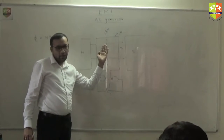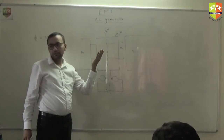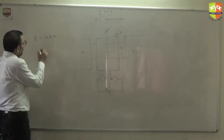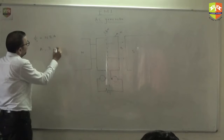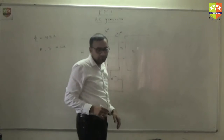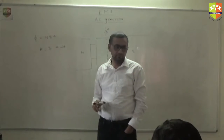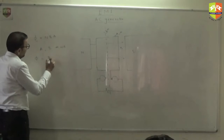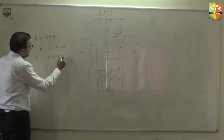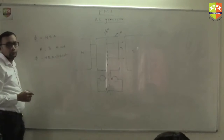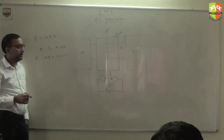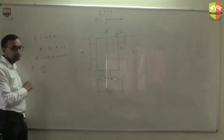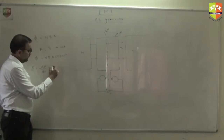This coil is rotating. After time t, the rotation angle theta will be omega t. So the angle between the area vector and the magnetic field becomes omega t. Initially it is zero, giving flux N B A. After time t, the flux becomes N B A cos(ωt).